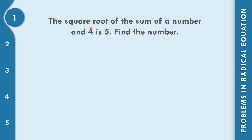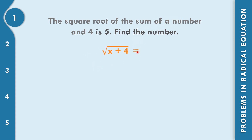This is the square root. Square root — how to represent the sum of a number. A number is represented with the letter x. So x sum means x plus 4. Square root of x plus 4 equals 5.